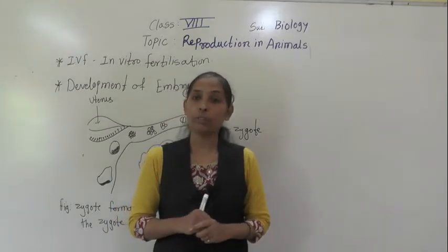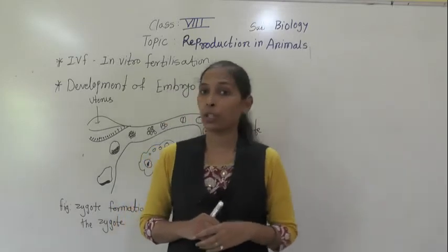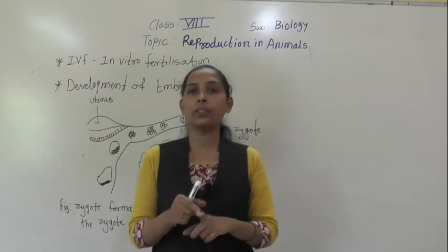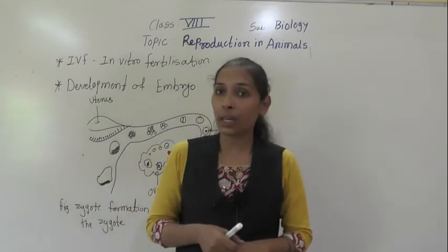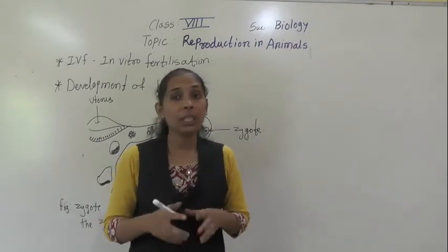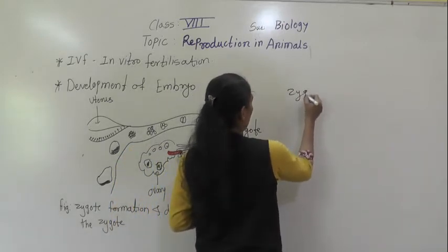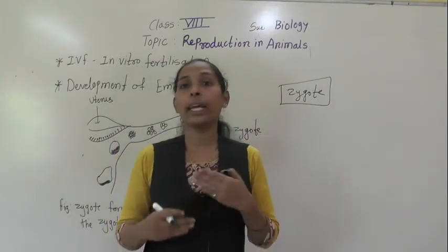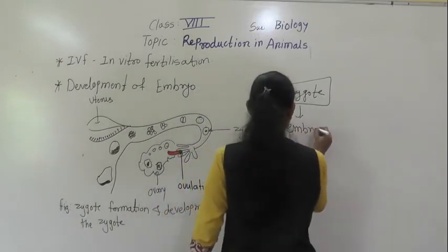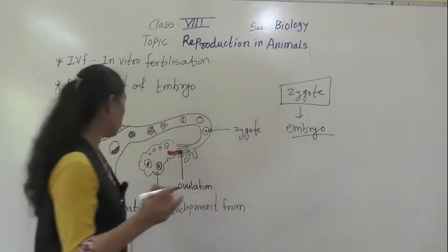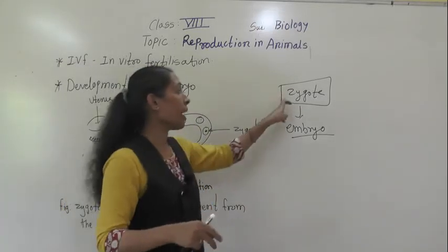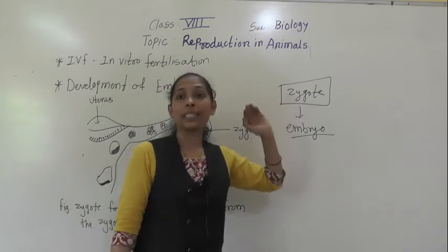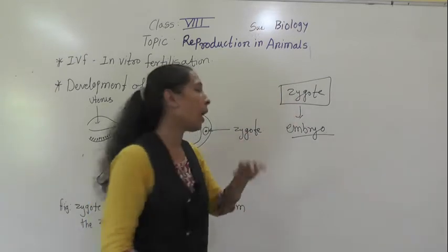Now let's discuss about the development of the embryo. Fertilization results in the formation of a zygote — when there is a fusion of the male gamete and the female gamete, a zygote is produced. That zygote starts to get developed into an embryo. After fertilization, the zygote begins to divide repeatedly to form a number of cells, or a ball of cells.